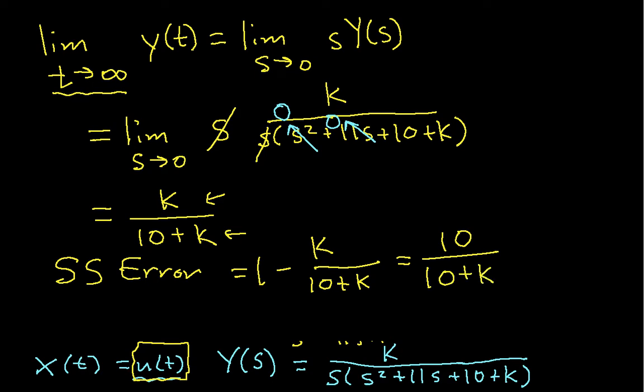So, for example, if I use a value of K equal 10, so I take my error and multiply by 10, my steady state value, my steady state error will be 1 half.